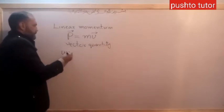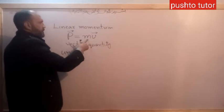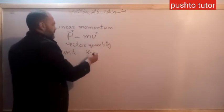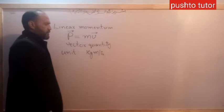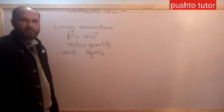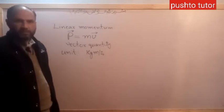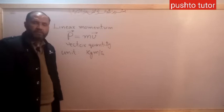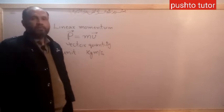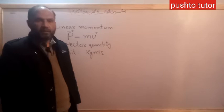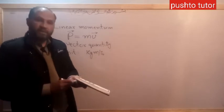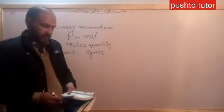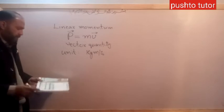For the unit of momentum, the unit of mass is kilogram and the unit of velocity is meter per second, so the unit of linear momentum is kilogram meter per second. Another definition: momentum is the quantity of motion contained by a body, or simply, the quantity of motion of a body is called momentum.